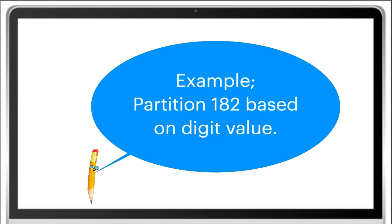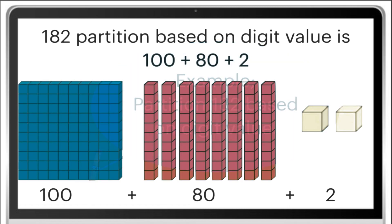Look at this diagram. This is a block representing 182. Partition 182 based on digit value is 100 plus 80 plus 2.